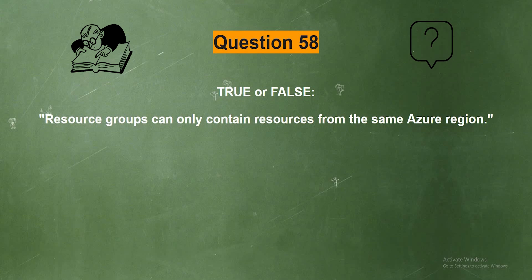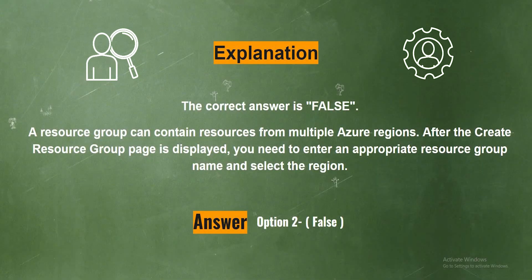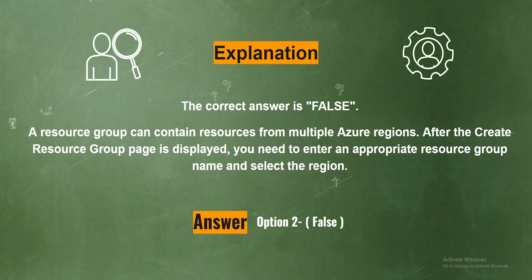Question 58. True or false? Resource groups can only contain resources from the same Azure region. Option 1: True. Option 2: False. The correct answer is Option 2, False. Explanation: The correct answer is False. A resource group can contain resources from multiple Azure regions. After the create resource group page is displayed, you need to enter an appropriate resource group name and select a region.